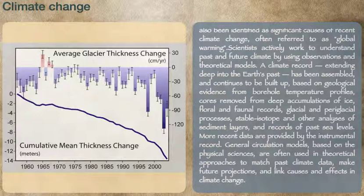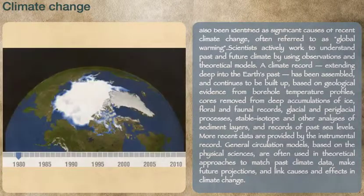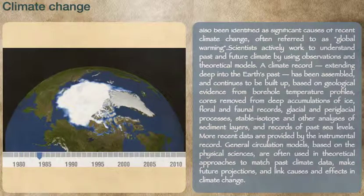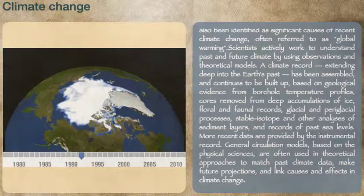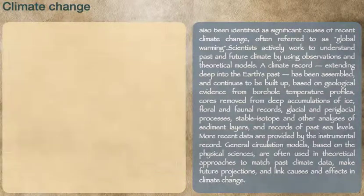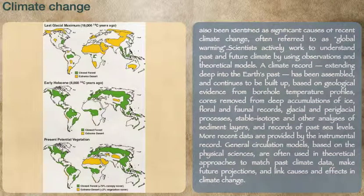More recent data are provided by the instrumental record. General circulation models, based on the physical sciences, are often used in theoretical approaches to match past climate data, make future projections, and link causes and effects in climate change.